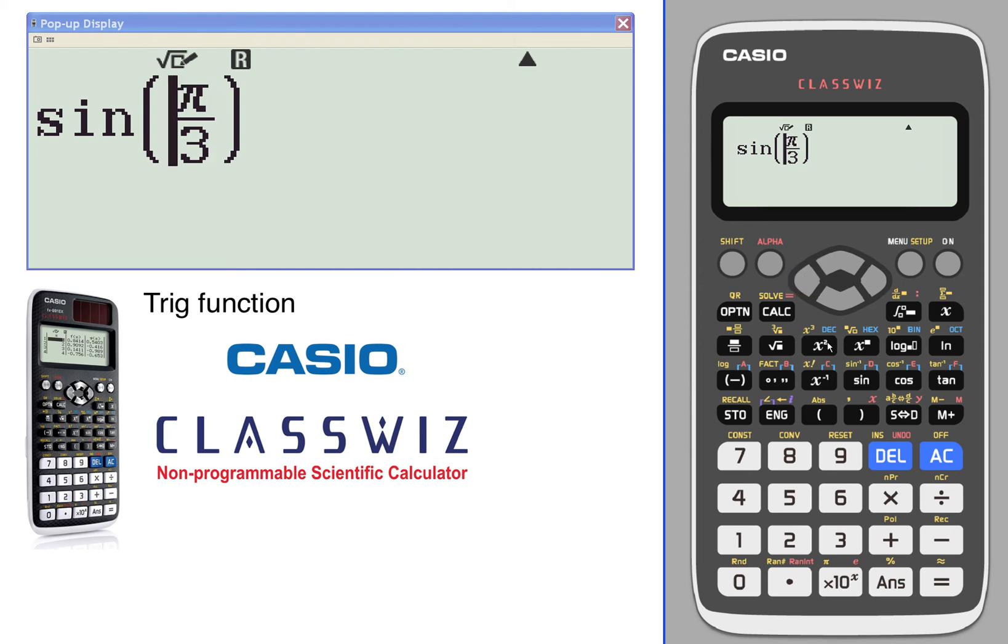We're just going to go ahead and edit this. We'll delete that. We'll say cosine of pi over 3. And we'll edit it one more time. Just to recycle that. Tangent of pi over 3.